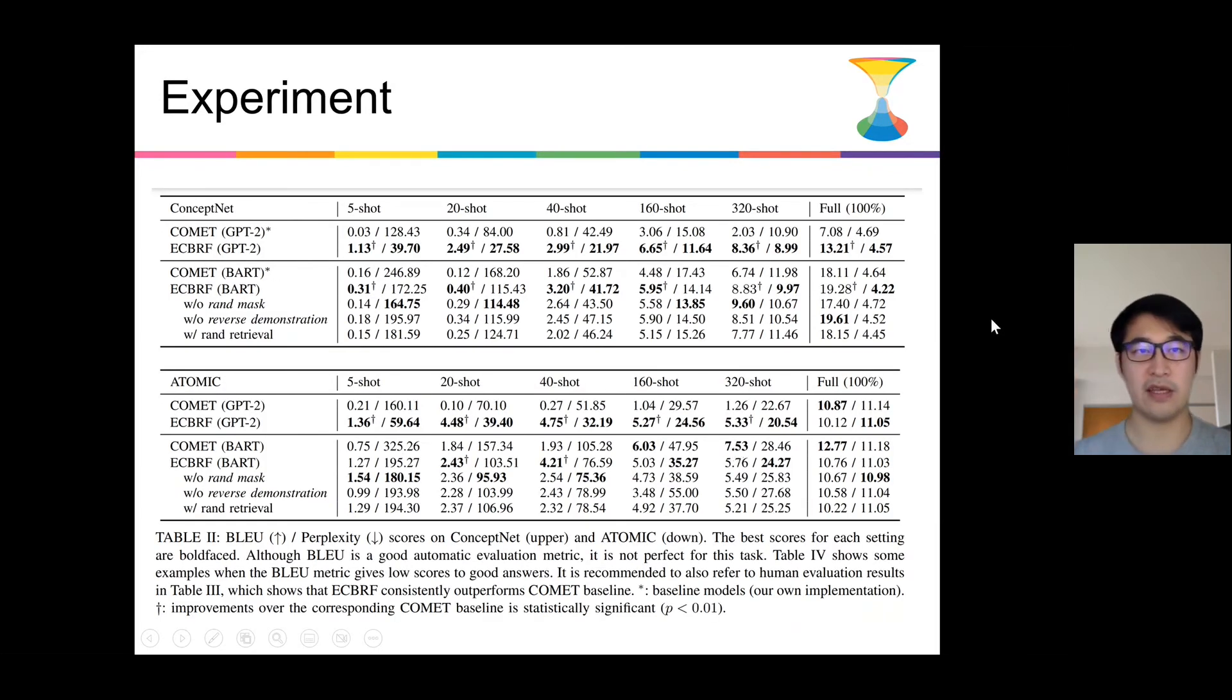Here shows the automatic evaluation results. Specifically, we use BLEU and perplexity as metrics, and we show that in most cases, ECBRF, which is our framework, the full name is end-to-end case-based reasoning framework, outperforms COMET in every case, whether in ConceptNet or ATOMIC datasets, and whether in GPT-2 or BART as base models. The only exception occurs in ATOMIC datasets when the train set is large, and the BLEU shows that ECBRF does not outperform COMET.